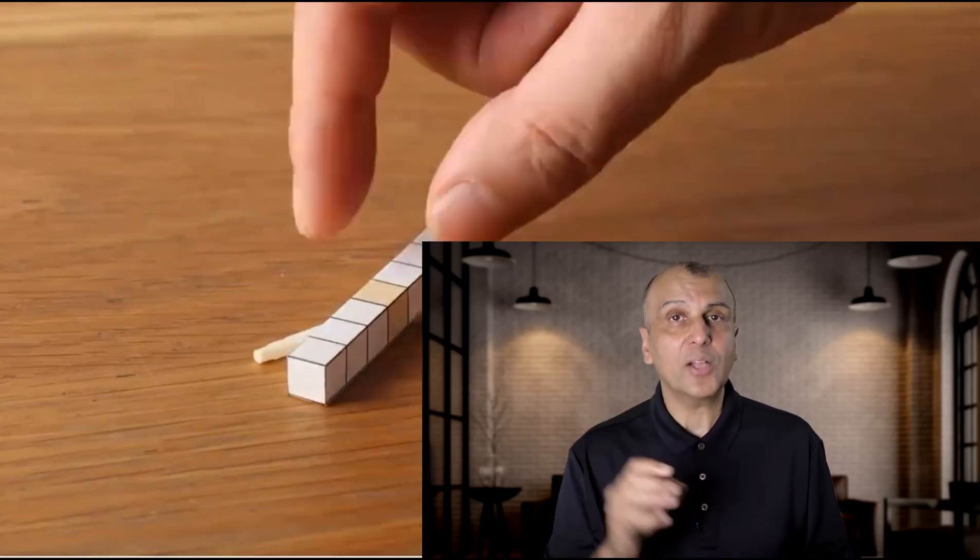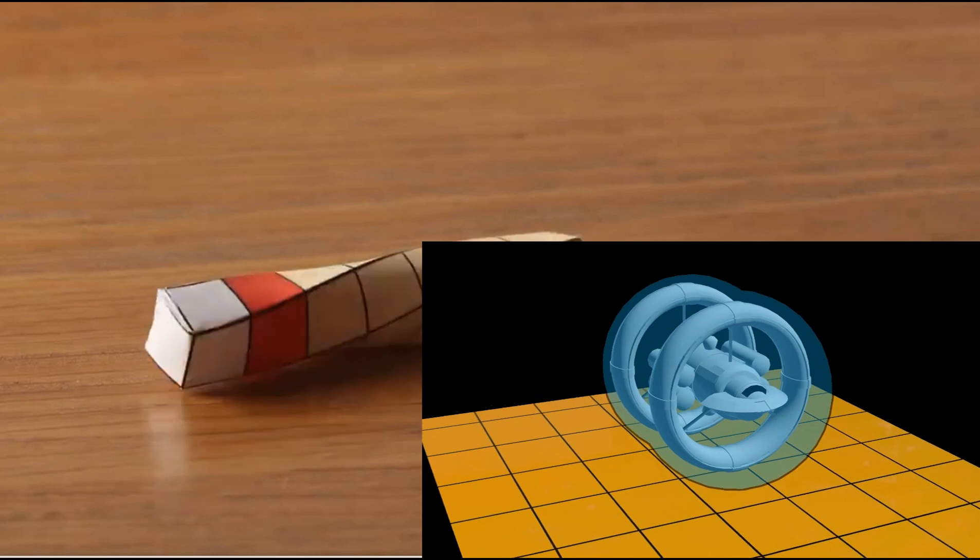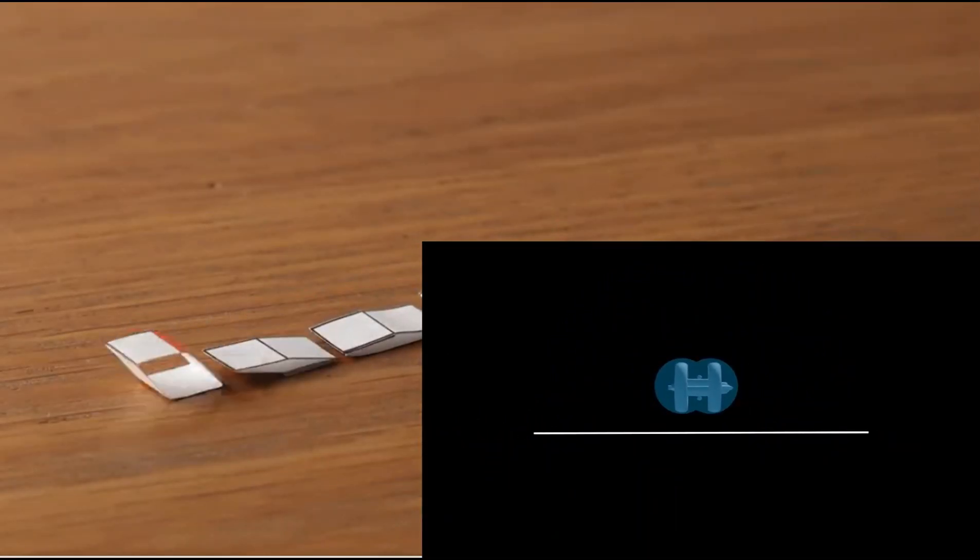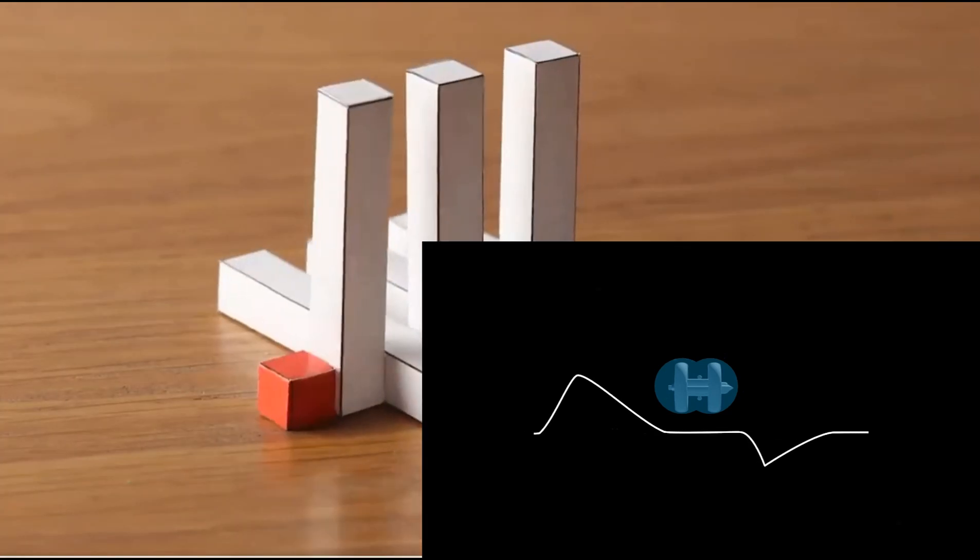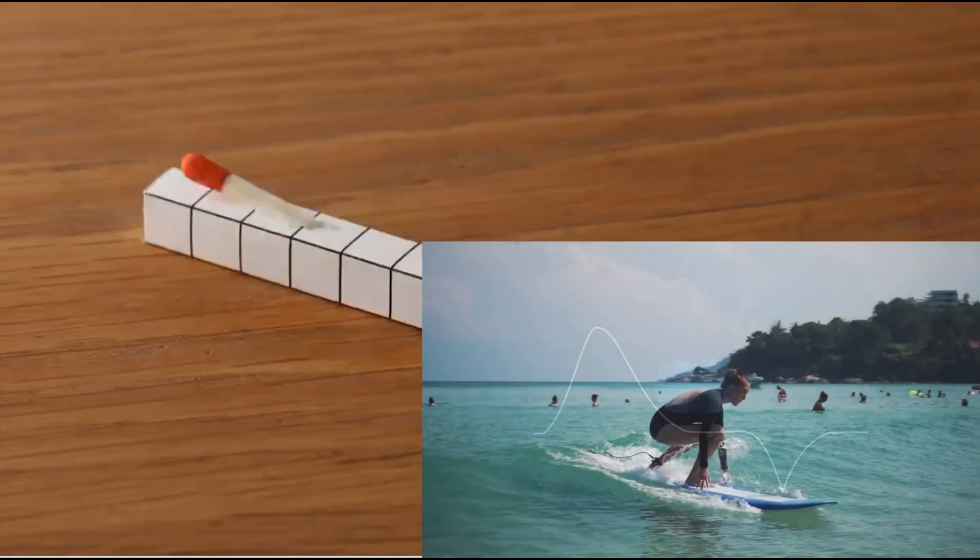And this is how Alcubierre's warp drive would work. Take a spaceship and put a bubble of space around it. If you can compress space in front of the bubble and expand space behind the bubble, then you can make the bubble of space along with the spaceship move. This would be like riding a wave on a surfboard.